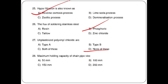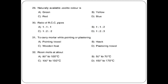Next question: maximum holding capacity of a chain pipe — options: 150, 200. The answer is option D: 200. Next question: naturally available coleite color — options: green, yellow, red, blue. The answer is green.